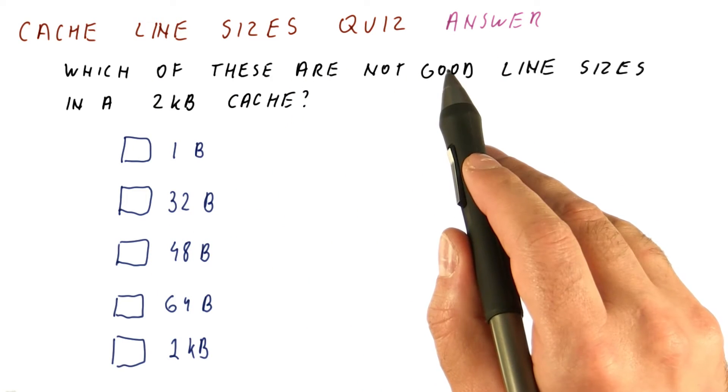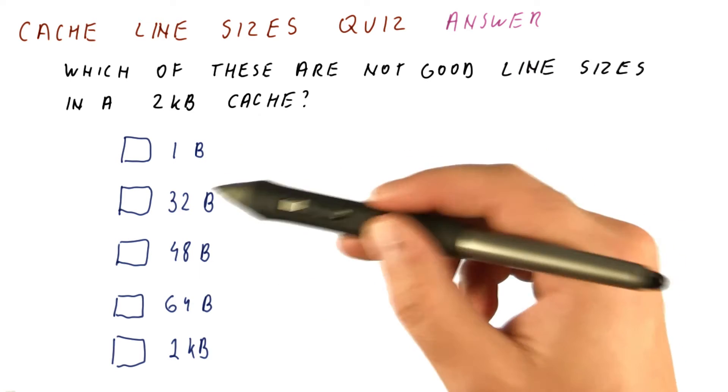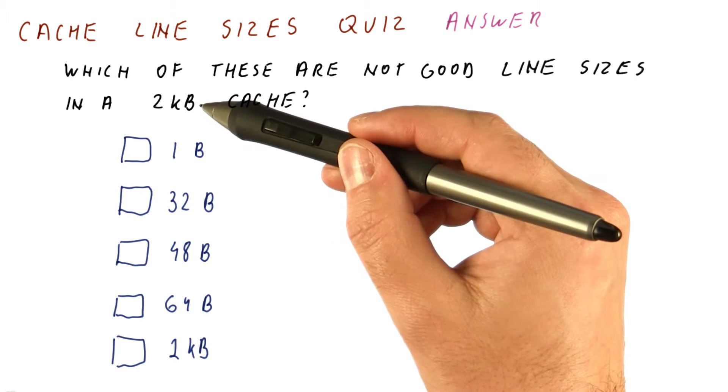Let's look at the answer for our cache line size quiz. We are asked to determine which of these are not good line sizes for a two kilobyte cache.